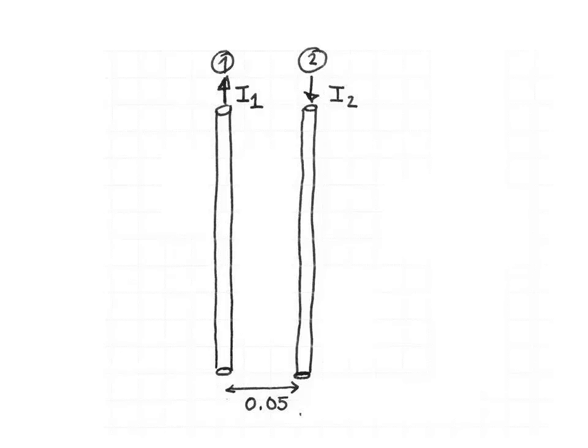We need to figure out where wire 3 would be — whether wire 3 would be on the right side of the picture, in the middle between the two wires, or on the left side of the picture. Wire 3 carries current in the same direction as wire 1. Two wires that carry current in the same direction attract each other, and two wires that carry current in opposite directions repel each other.